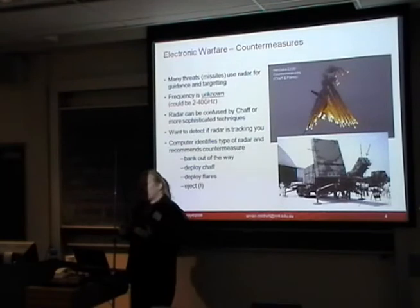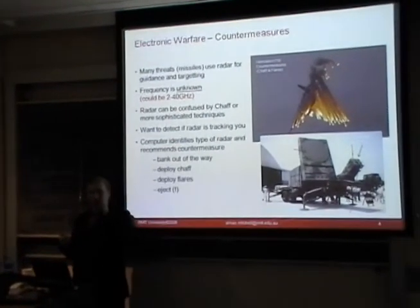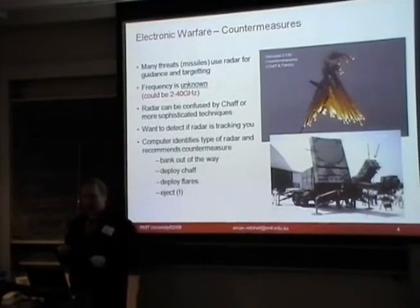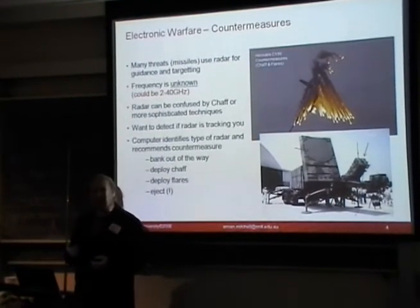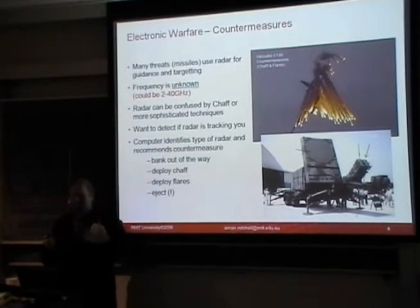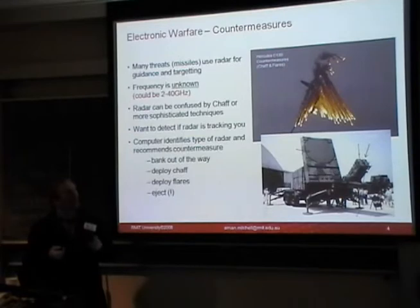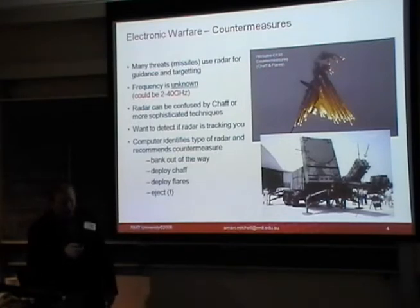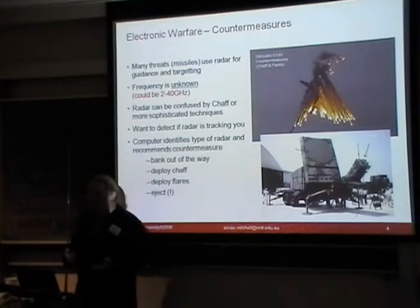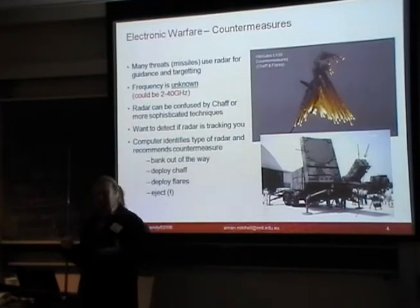Many threats — normally missiles — use radar to guide them and track what they're trying to hit. It's useful to have systems on board an aircraft to detect whether a radar is actually tracking you. This is what's called an electronic warfare radar warning receiver — a warning receiver that tells you a radar has locked onto you. Associated with that is the idea of countermeasures. Usually the radar warning receiver gets the computer to suggest what the threat is and what countermeasure to deploy.